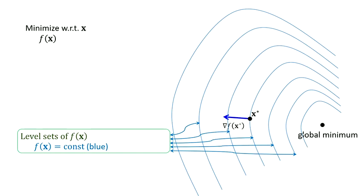If the global minimum is where f of x equals zero, then maybe this contour represents f of x equals one, this one f of x equals two, three, four, five, six, and seven, and so on. These are the level sets.